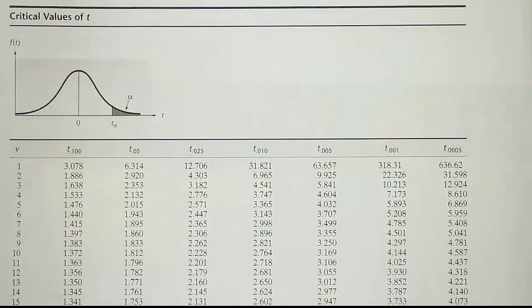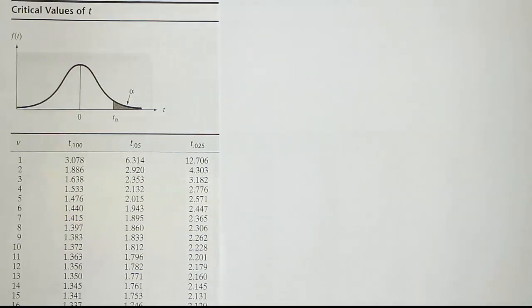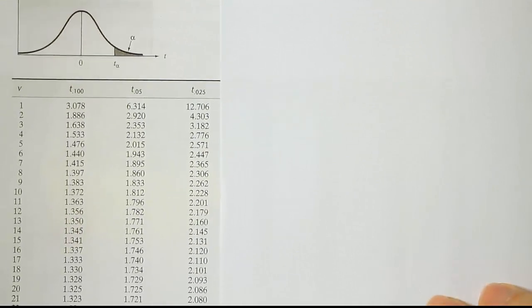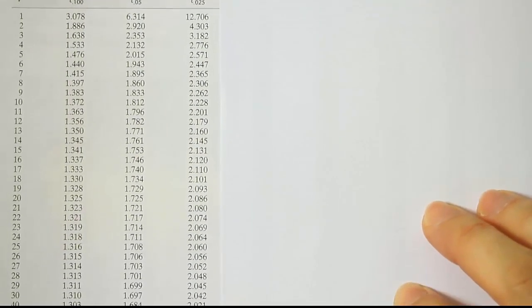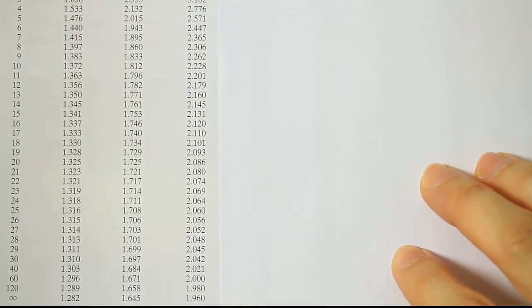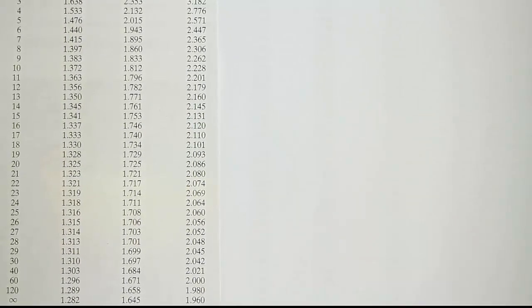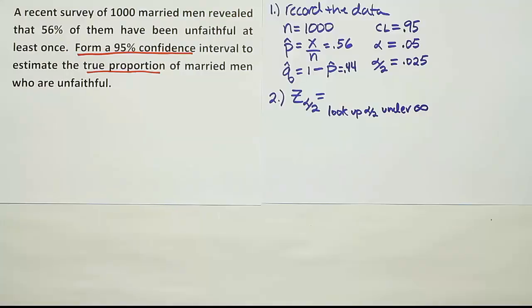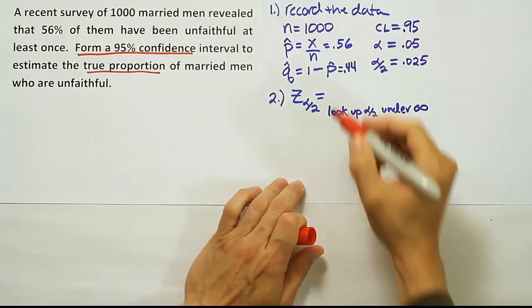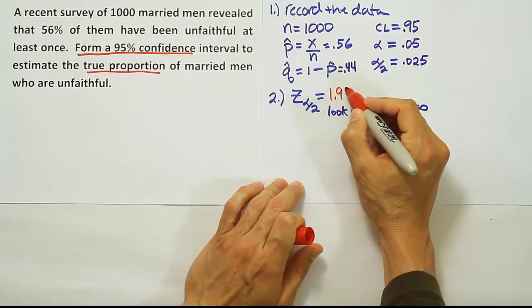Now we're looking up 0.025, going all the way down to the bottom to get to the z value. Let's go straight to the bottom until we see the infinity symbol, and the answer is 1.960.